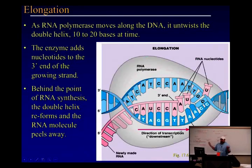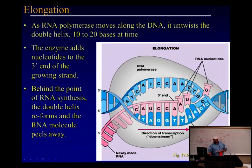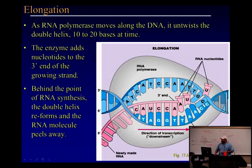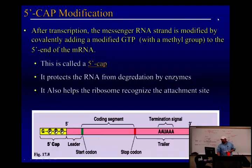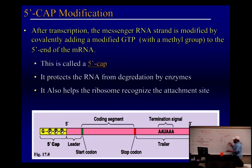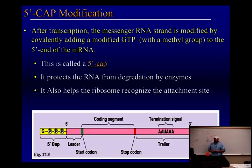Once the transcription factors have bound, the polymerase binds, opens the DNA, and elongation begins — simply matching letters one by one, producing a growing messenger RNA. Once it hits the terminator it falls off, the mRNA is released, and termination is complete.